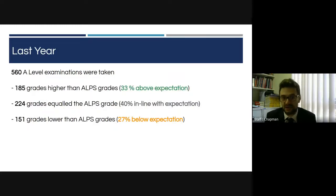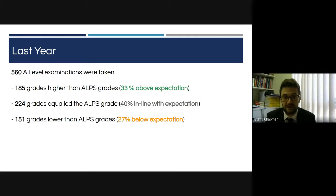To give you some context, last year there were 560 A-level examinations that were awarded. 185 grades were higher than the minimum expected ALPS grade, 224 were in line with expectation, and 151 grades were lower. We very much hope this year, with all the support that we are giving students, that we will see a significant increase in the number who are above expectation or in line with expectation.